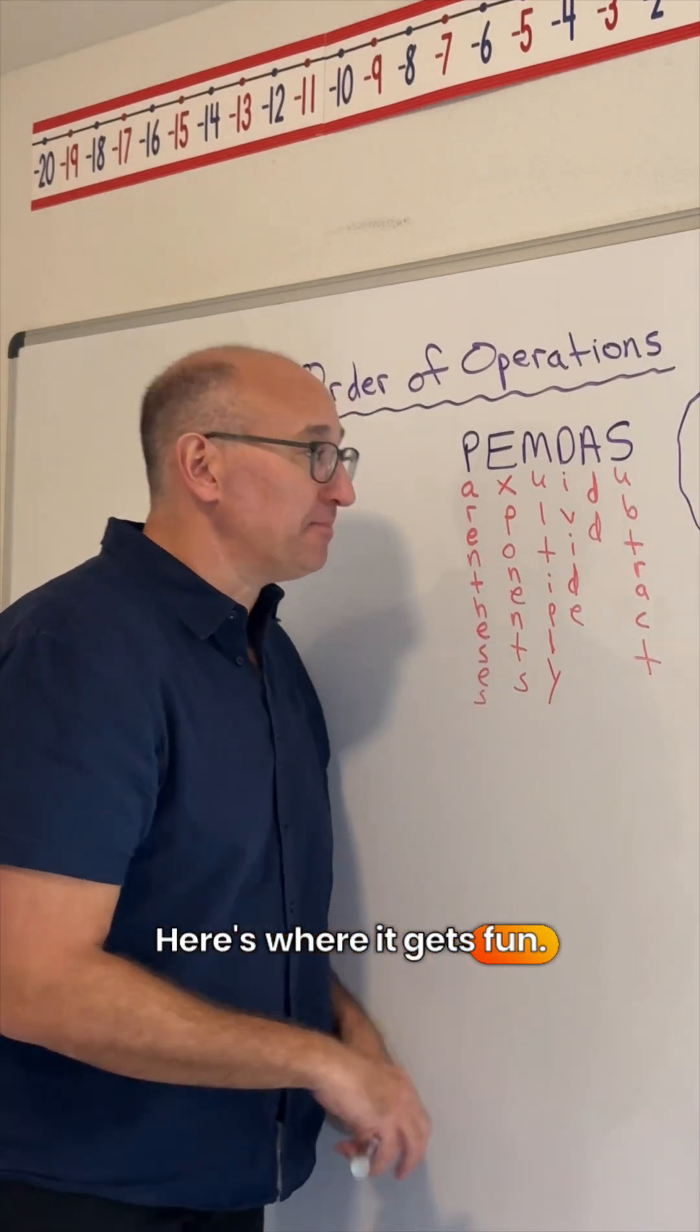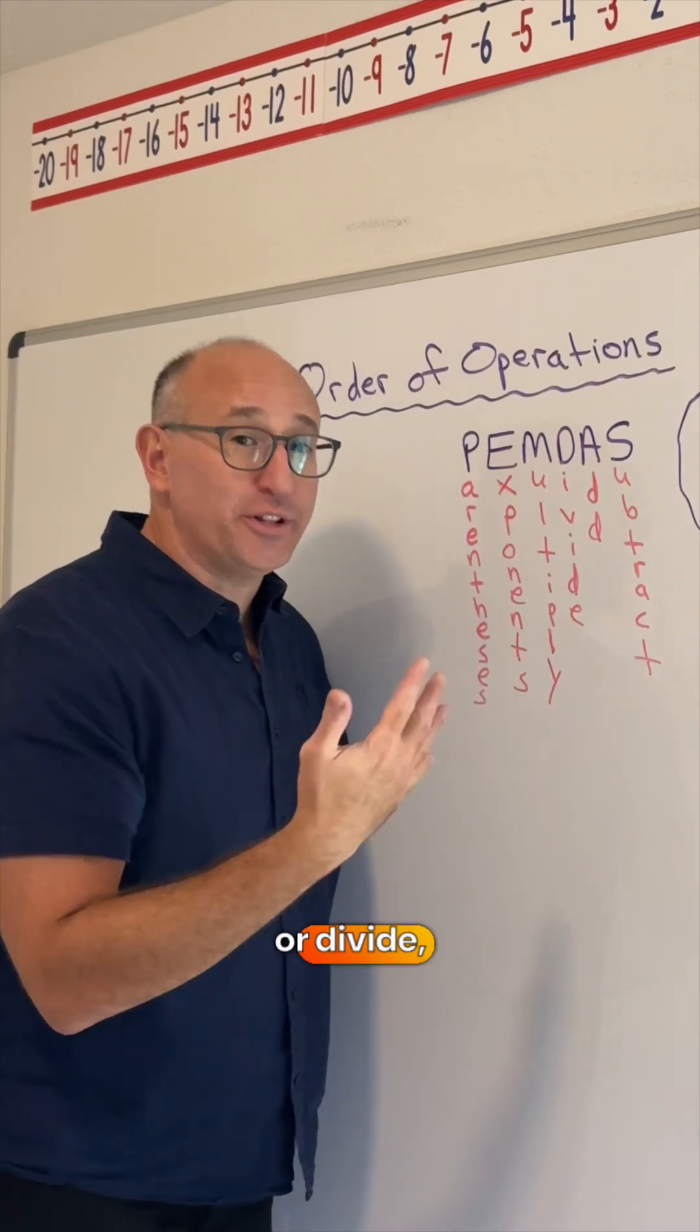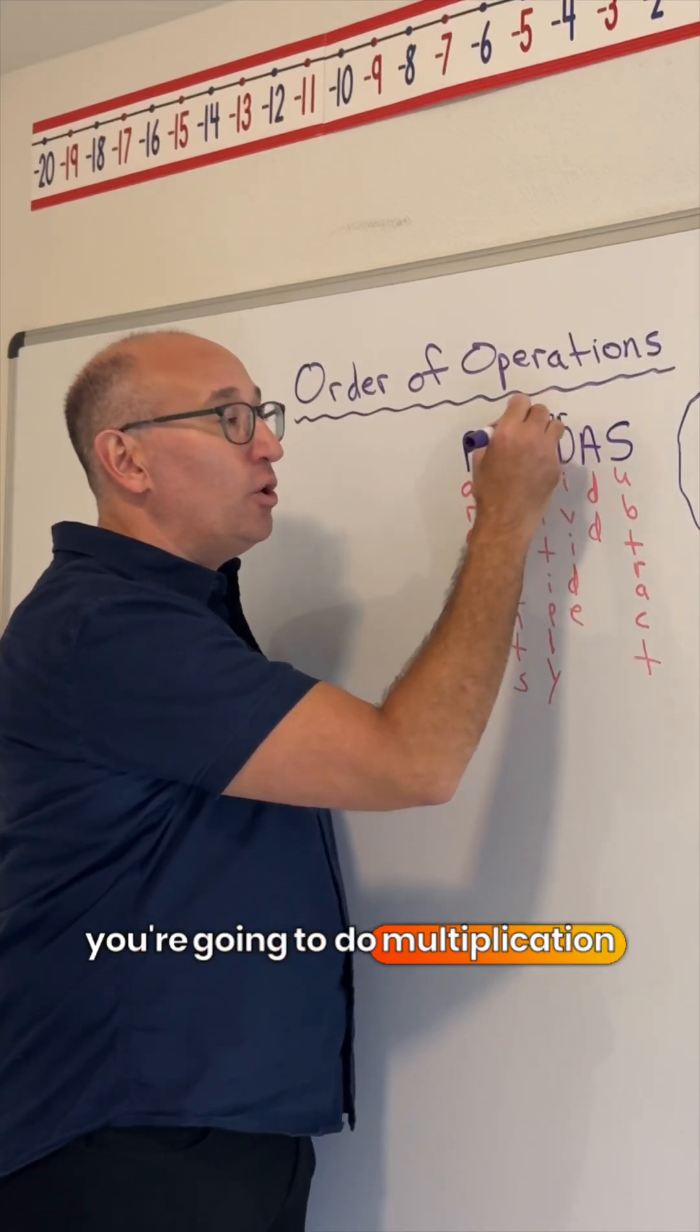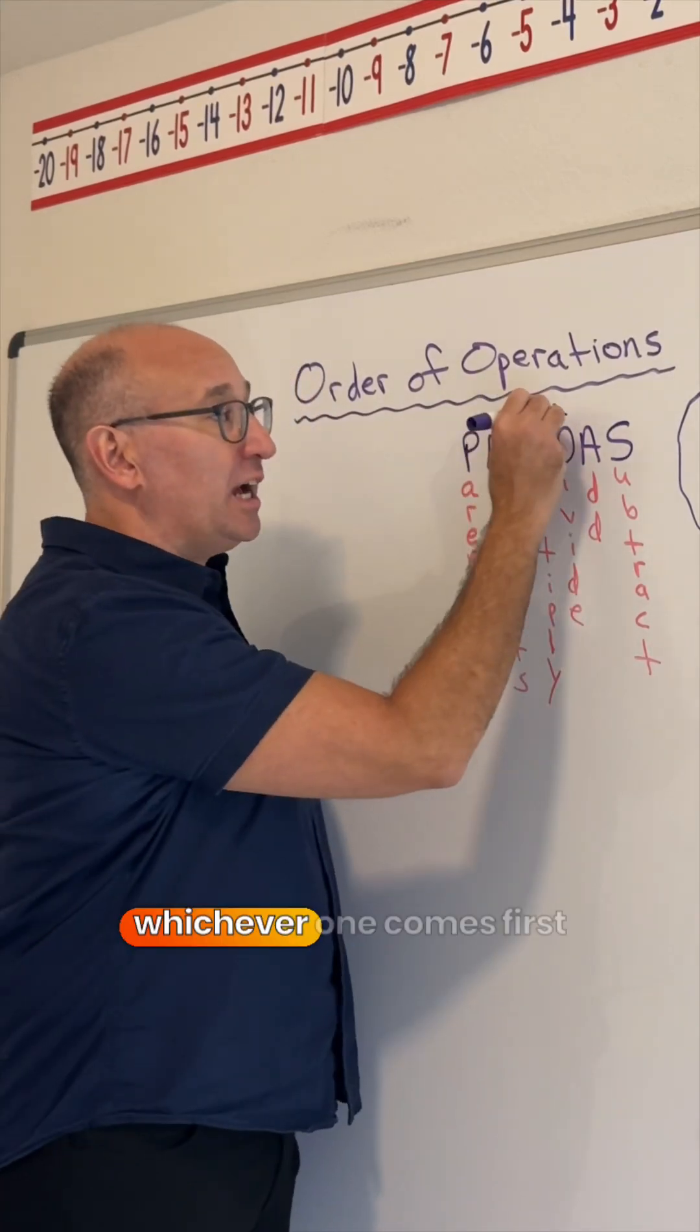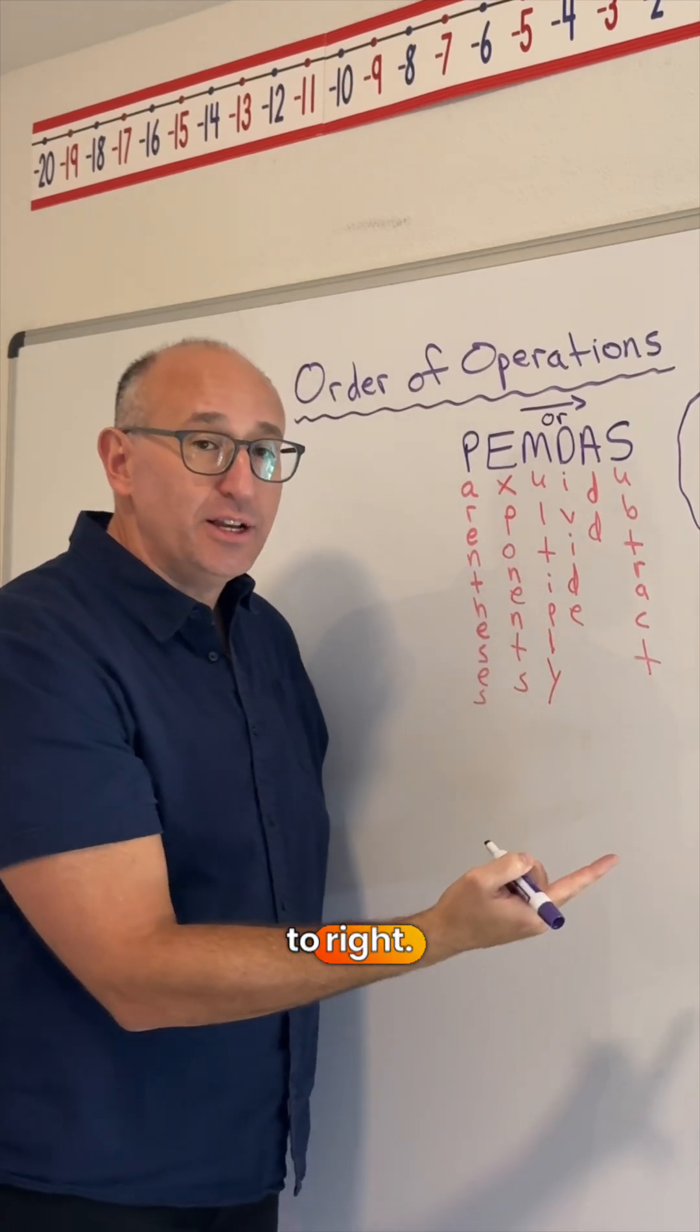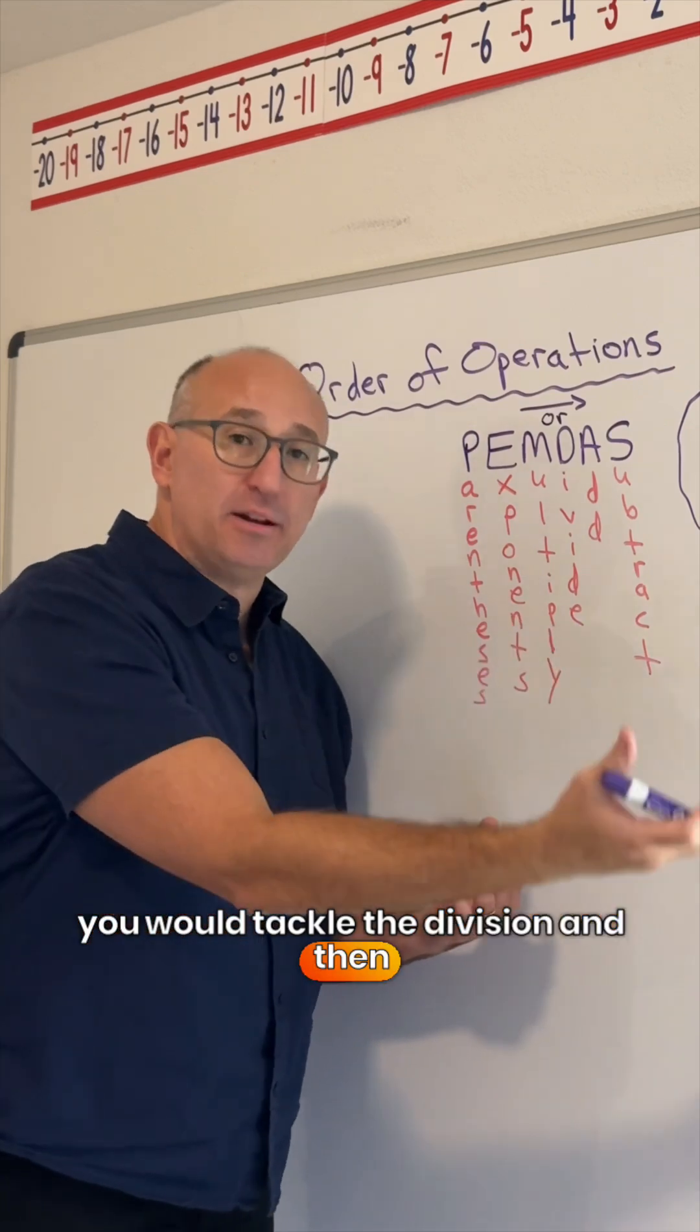Here's where it gets fun. The M and the D stand for multiply or divide, but you have to make sure that you're going to do multiplication or division, whichever one comes first, moving left to right. So if division comes first in your problem, you would tackle the division and then move on to the multiplication.